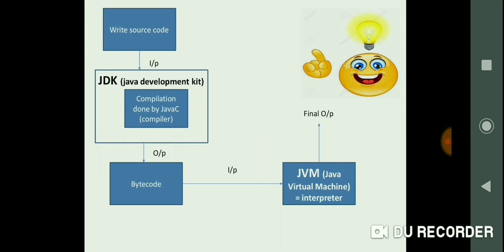See this diagram. You will write your source code, right? That will be given as input to JDK. JDK stands for Java Development Kit. Java Development Kit will have the compilation done by javac compiler. Under this JDK, your compiler of Java, that is javac, compiles the program. The output of this JDK will be bytecode.